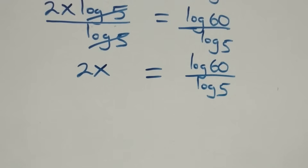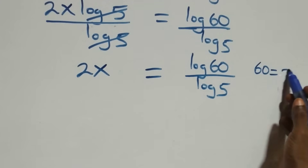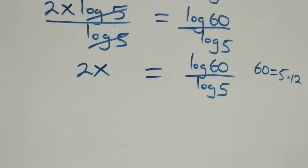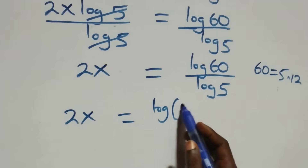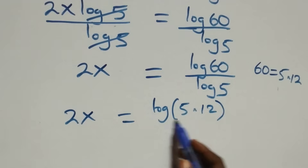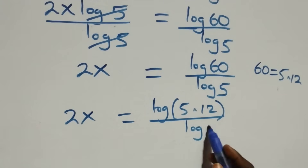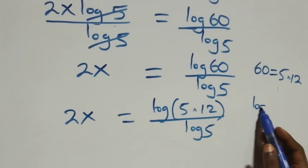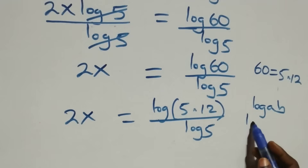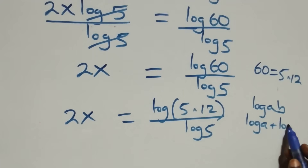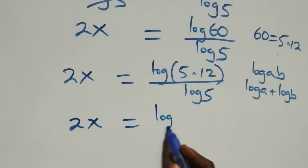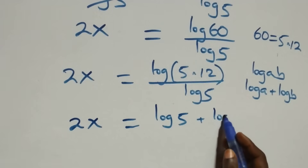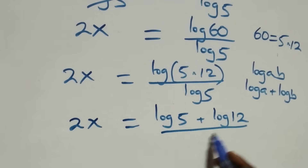From here, we can write 60 as 5 times 12, which implies this becomes 2x equals log(5 times 12) over log 5. We then apply the product rule of logarithms — log(a·b) = log a + log b — so this becomes 2x equals log 5 plus log 12, over log 5.